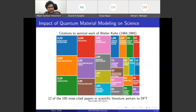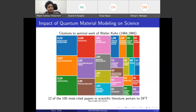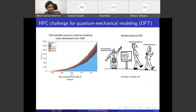If you look at the impact of quantum material modeling on science, the seminal work by Walter Kohn, for which he received the Nobel Prize for density functional theory — proposed in 1964–65 and awarded in 1998 — has immense impact in areas including applied physics, organic chemistry, nanotechnology, condensed matter, optical properties, energy, and electrochemistry. In fact, 12 of the 100 most cited papers in scientific literature today pertain to DFT-based calculations.